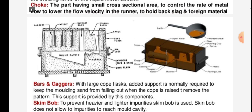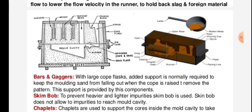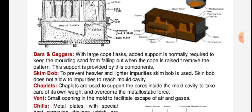The figure shows the casting process. Bars and gaggers: with large cope flasks, support is normally required to keep the molding sand from falling out when the cope is raised to remove the pattern — this support is provided by bars and gaggers. Skin bob is used to prevent heavier and lighter impurities from reaching the mold cavity.